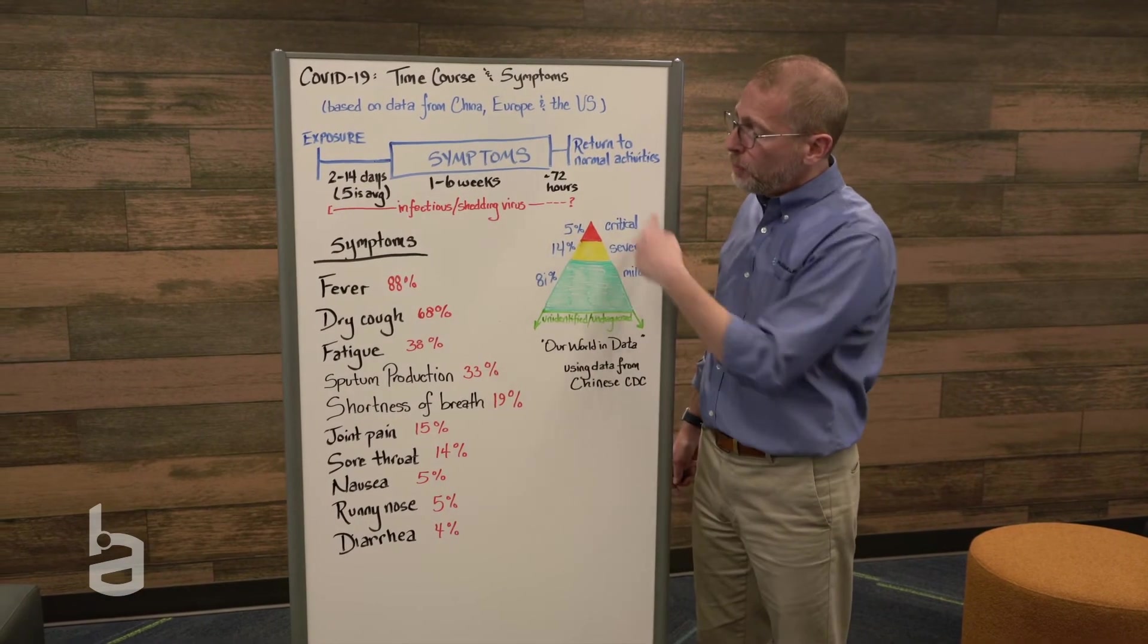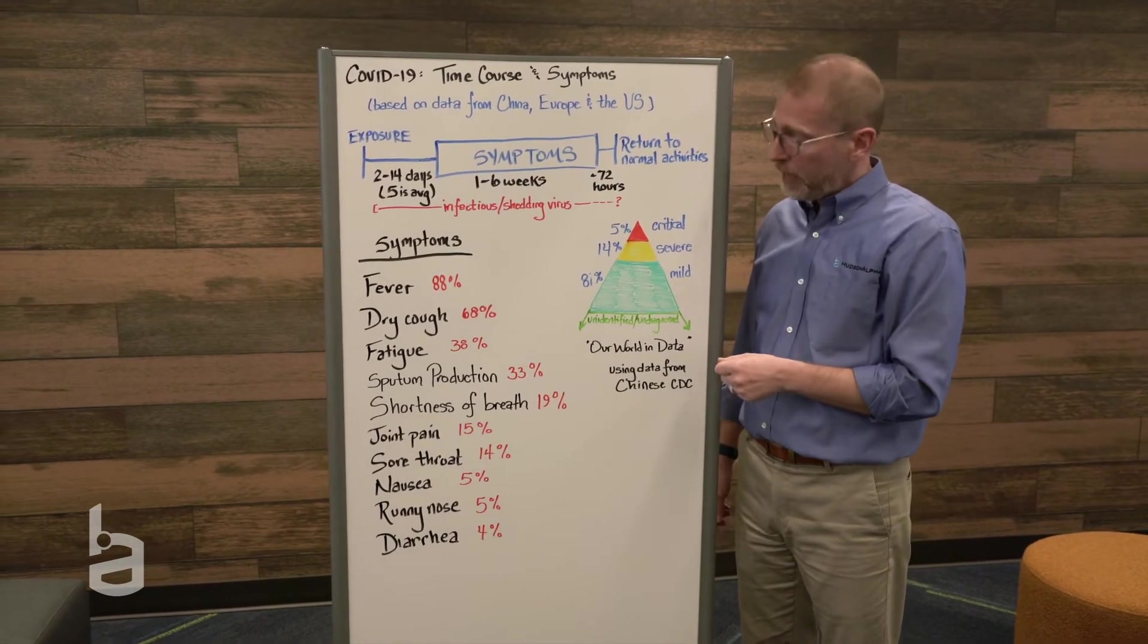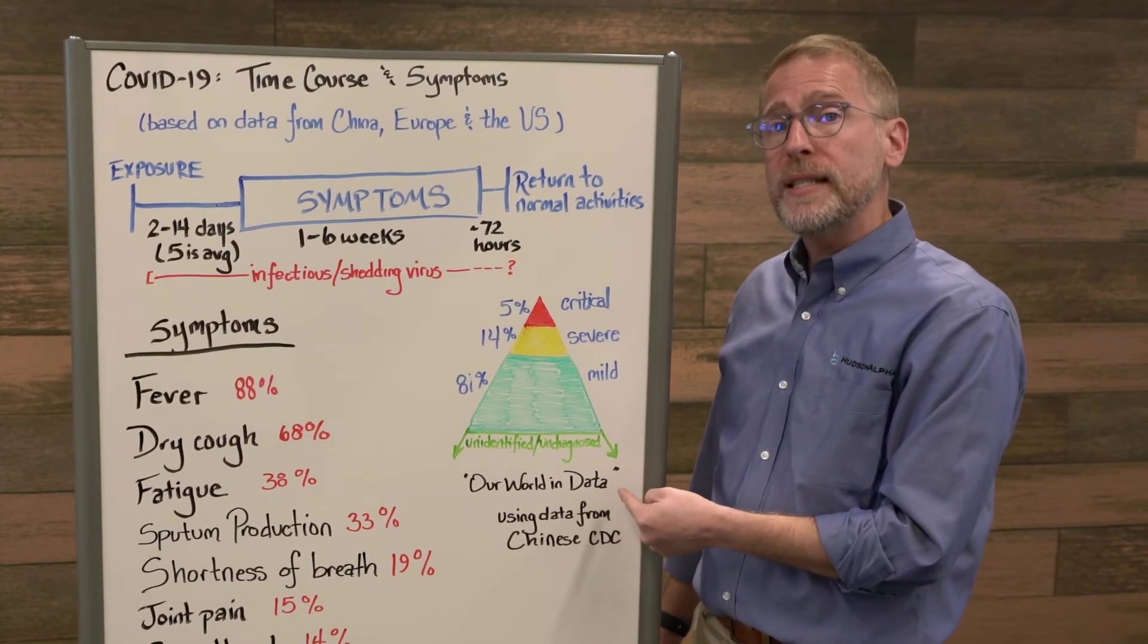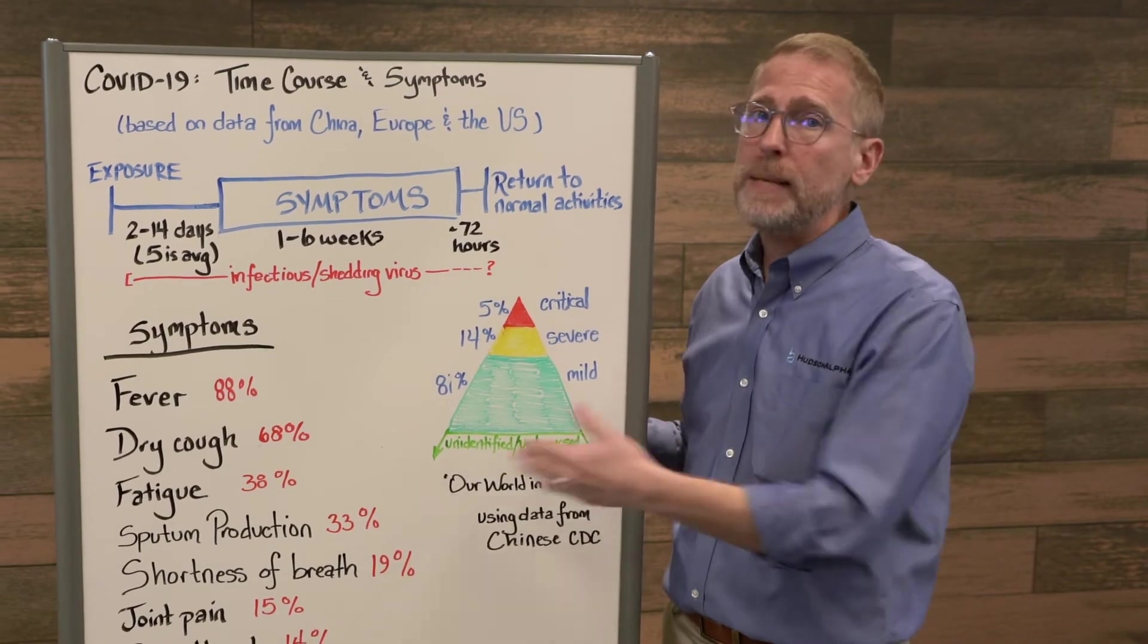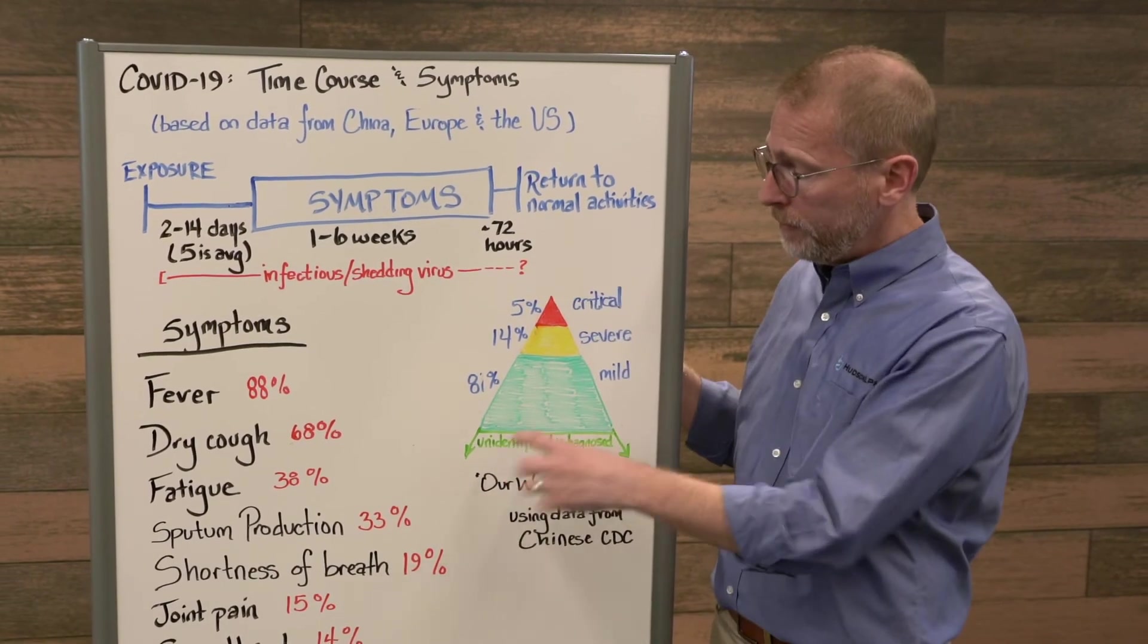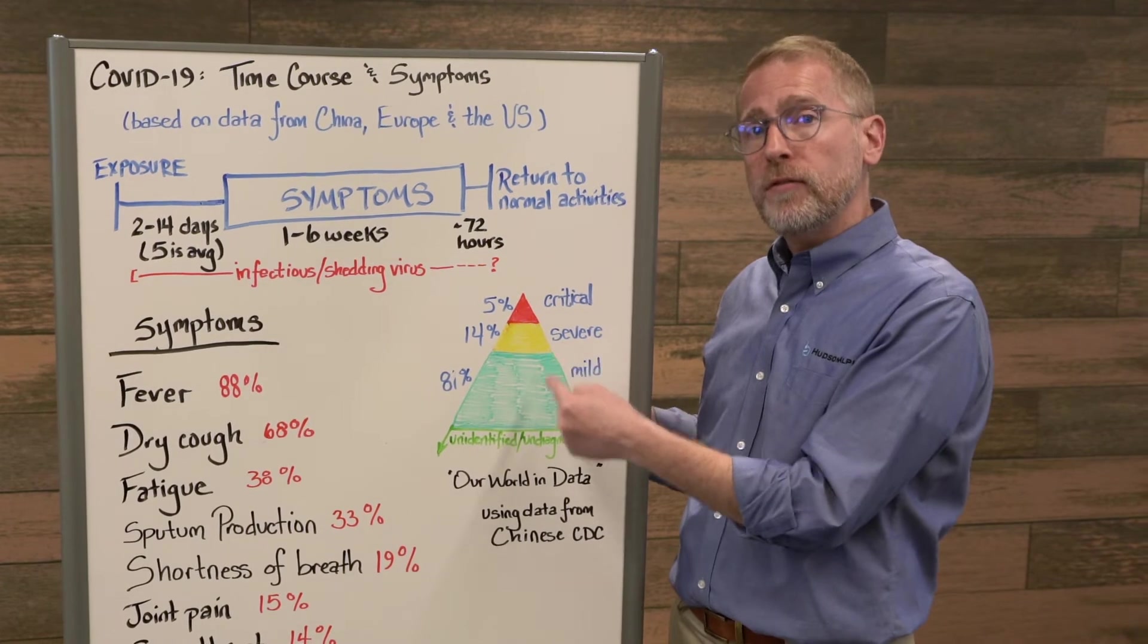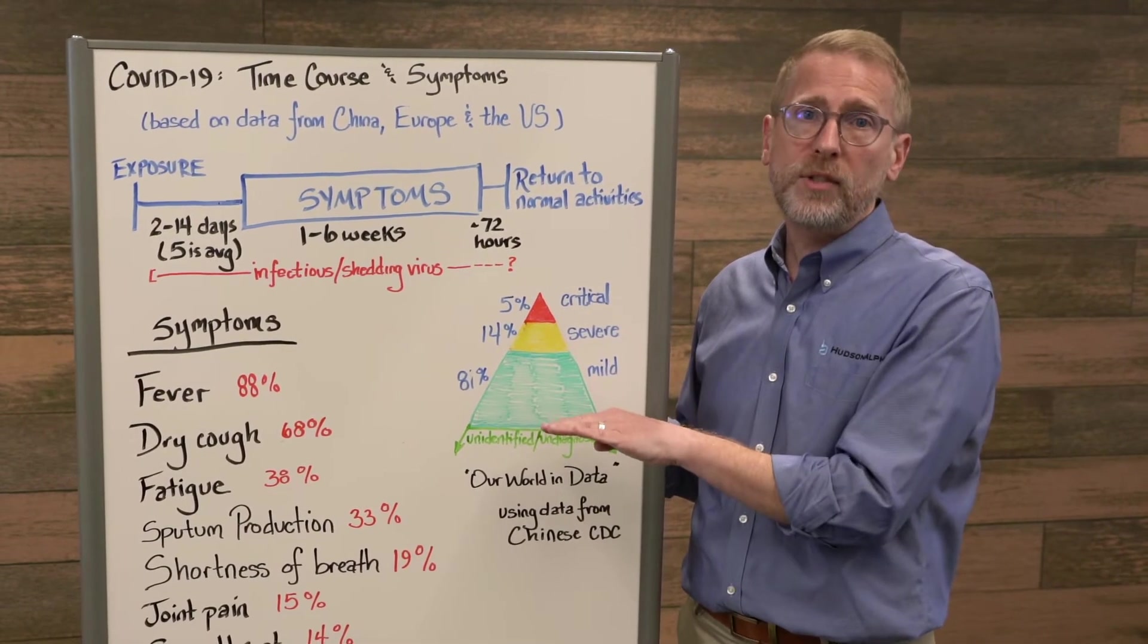This is data from China looking at the severity of the individuals that were affected. You can find this data on a website called Our World in Data. They have a phenomenal coronavirus set of content. If you want to dig deep and go down some rabbit holes, I would encourage you to take a look at that. Here are the key messages from this graph.